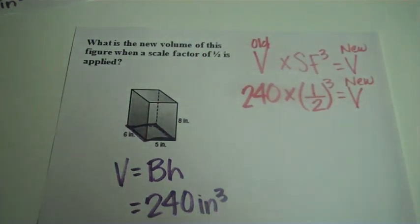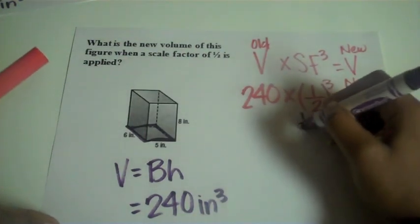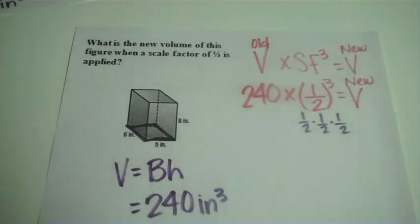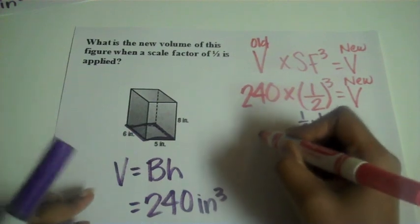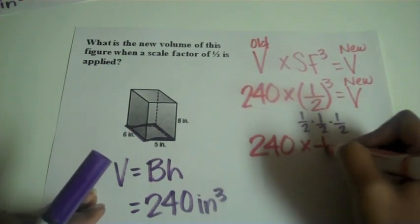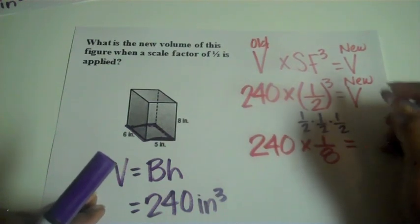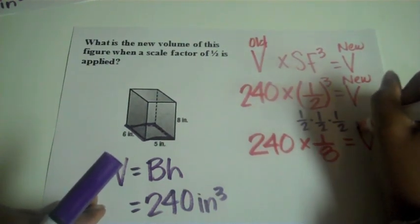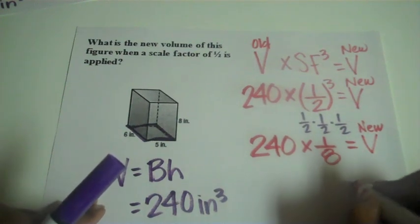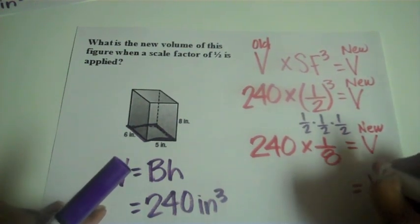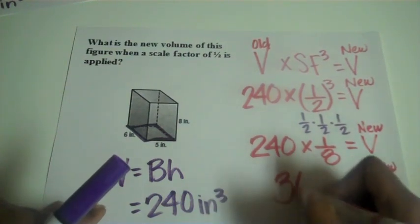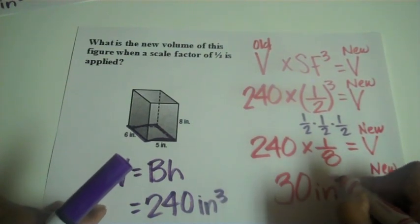Okay, remember 1 half cubed is going to be 1 half times 1 half times 1 half. And we can just multiply straight across, makes that real easy. So that means we're going to be doing 240 times 1 eighth to get our new volume. And remember multiplying by 1 eighth would be the same as dividing by 8. So when we do that division, we end up with a new volume of 30 inches cubed.